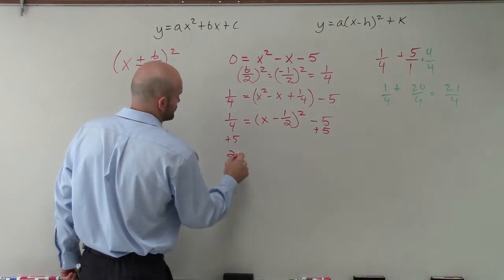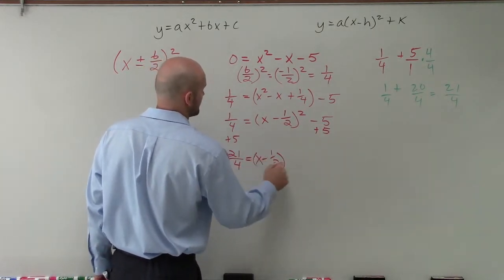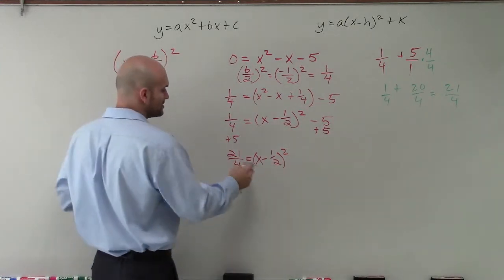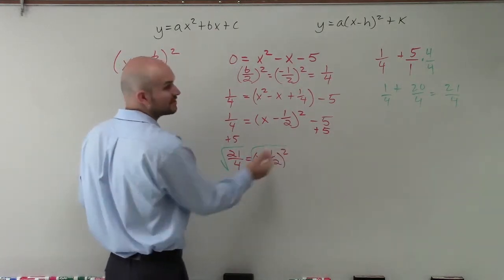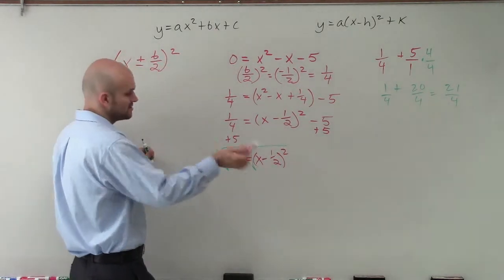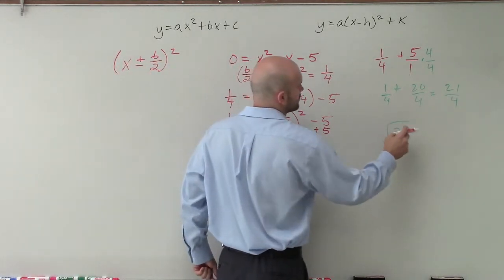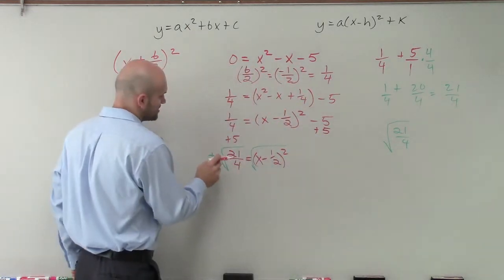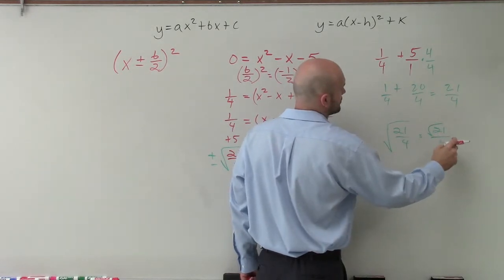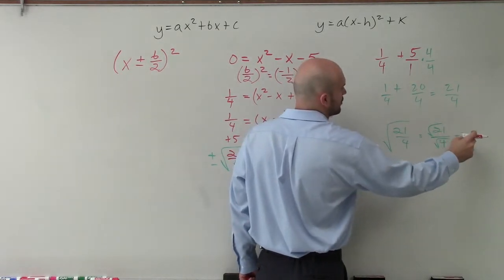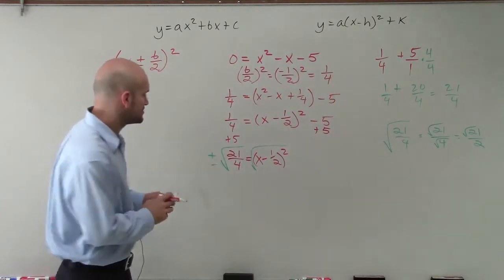So therefore, I have 21 over 4 is equal to x minus 1 half squared. Now I need to undo the squaring. So I'm going to undo squaring by taking the square root of both sides. Well, the square root of something squared, those are going to be inverse operations. So they'll undo each other. Over here, remember, you can break apart the square root of 21 over 4. Make sure we also include that's a plus or minus. And that's going to equal the square root of 21 over the square root of 4, which we know is square root of 21 over 2. Now we can't simplify the square root of 21, so we'll just leave it as that.